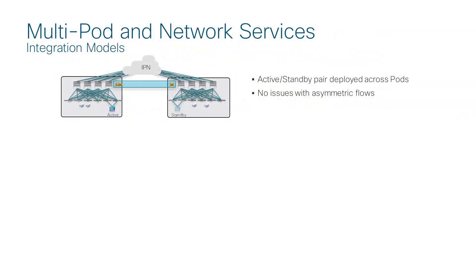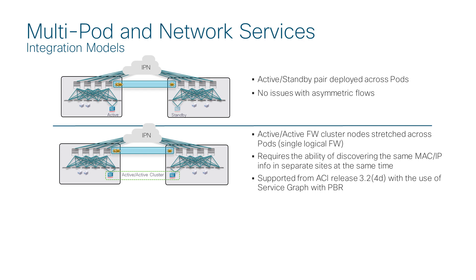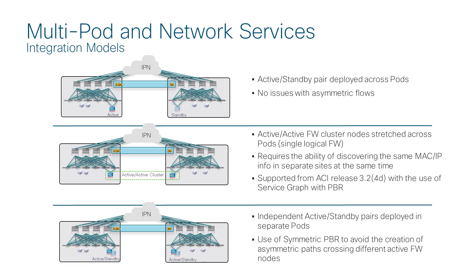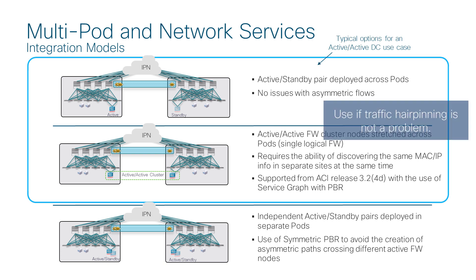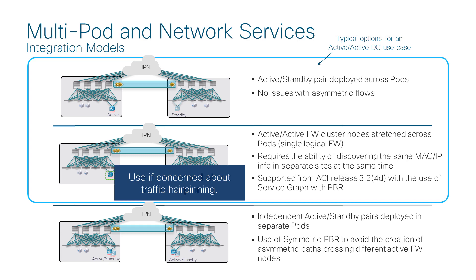So what are the valid L4-L7 service designs for multipod and multisite to keep traffic symmetric? For multipod, we have three options. The first option is active-standby across pods — traffic always goes to the active device, so there's no issue with asymmetric flow. The second option is active-active cluster across pods, which requires PBR and a firewall that supports active-active clustering. The third option is use of individual active-standby pairs in each pod with symmetric PBR for load balancing. Typical options for active-active datacenter design are option one and two. If traffic hair-pinning is not a problem, option one is simple and good. If hair-pinning is a concern, option two is recommended.